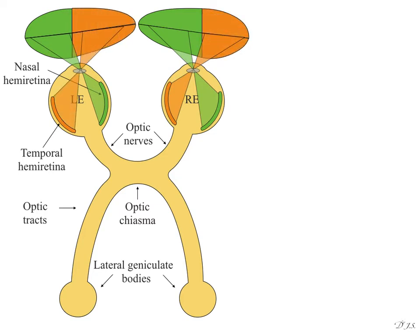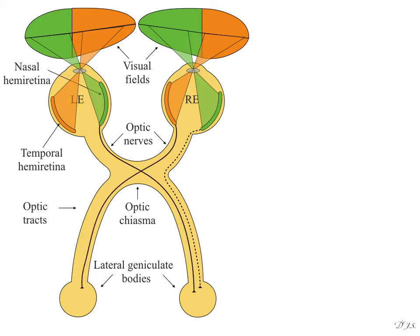Sensations from the right eye temporal hemiretina and left eye nasal hemiretina reach the right side lateral geniculate body. Sensations from the right eye nasal hemiretina and left eye temporal hemiretina reach the left side lateral geniculate body. This means both temporal hemiretinas project ipsilaterally and both nasal hemiretinas project contralaterally.